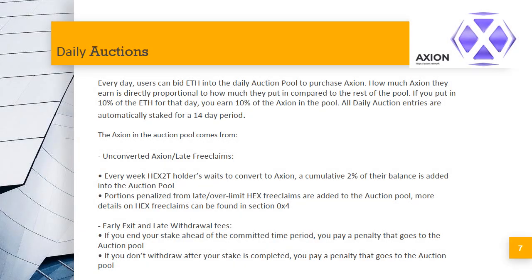The daily auction — putting tokens and value into your pocket. To get Axion, it needs to be claimed by HEX2 T-holders. The longer they wait to claim, the more penalties they face — about 2% of their total per week. This 2% is added into a daily auction pool where people can bid using ETH on the Axion tokens within it. If you bid 10% of the ETH on that day, you get 10% of the pool rewards. 80% of the ETH paid in the auction is then used to hyperdrive both the Axion token and the stakers' earnings. First, the ETH is used to purchase the tokens, boosting the token price, and then those tokens are distributed to stakers, creating a very strong positive feedback loop.